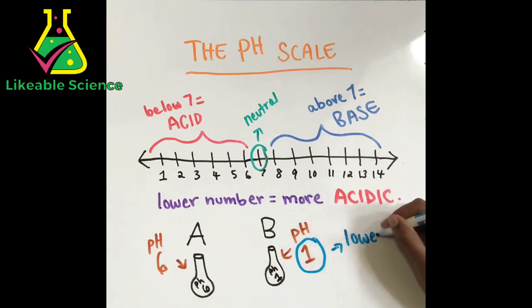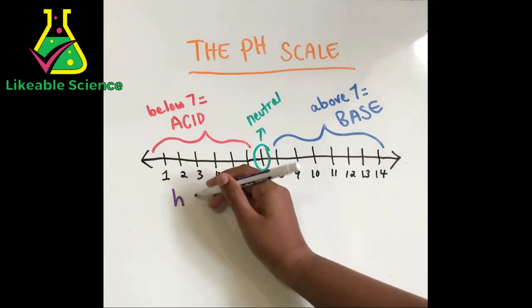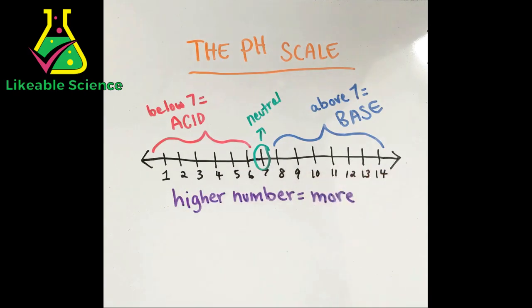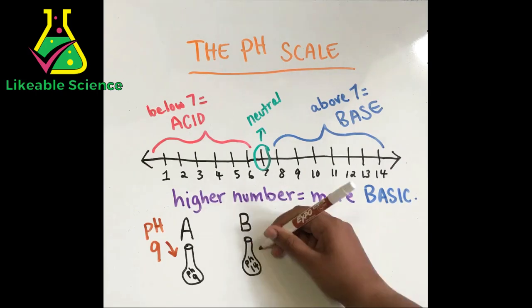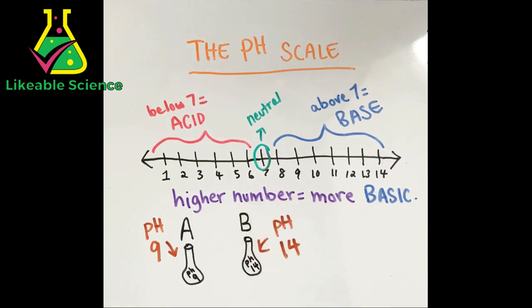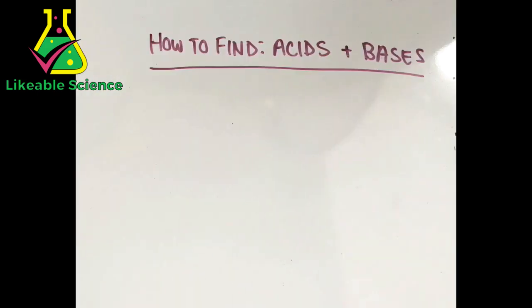For bases, it's the complete opposite. The higher the number is on the pH scale, the more basic the substance will be. So let's try this again but with bases this time. Substance A has a pH of 9 and substance B has a pH of 14. Which is more basic? 14 is the higher number, so substance B would be more basic.